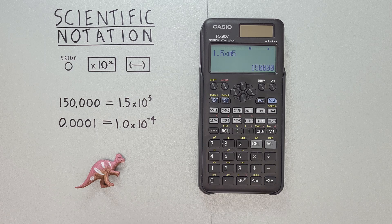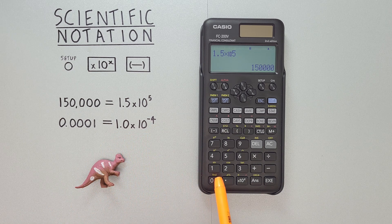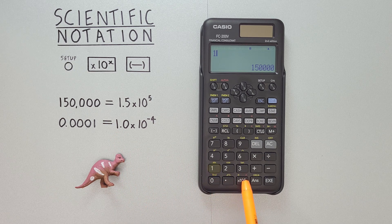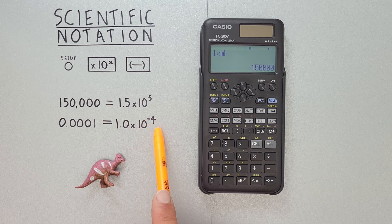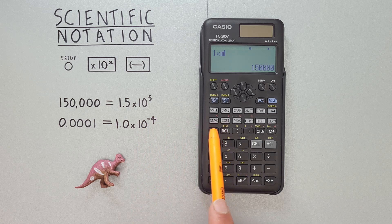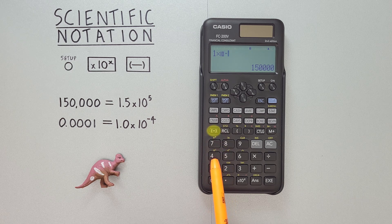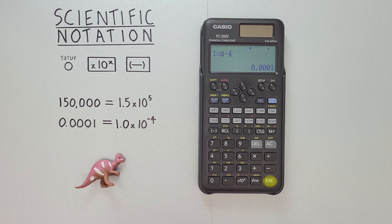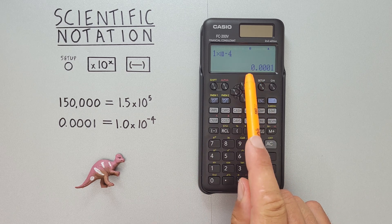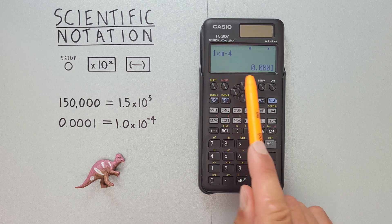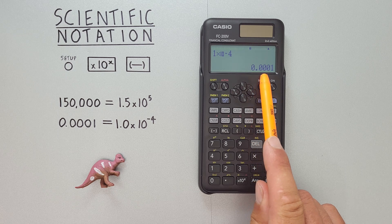Again, this also works with small numbers. So if you want to enter 1 times 10 to the power of negative 4, we can go ahead and enter the 1, times 10 to the power of x. And then we need to use negative 4 here. So first we hit the negative key — not the subtraction key, the negative key that looks like this — and then the 4, hit EXE, and there we go. 1 times 10 to the power of negative 4 is the same as 0.0001.